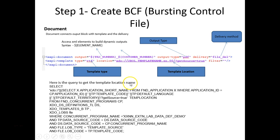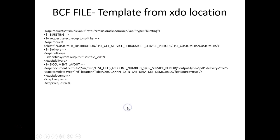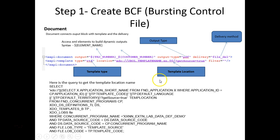You can access the output and reference things like customer number and transaction number using a special syntax. You can always refer the template location from the database — you don't have to type it in the file. You can use a query for that; I'll attach this query in the zip file so you can download and try it. When you refer the data template, you reference it at the source by running the query to get the definition.